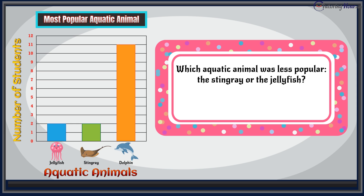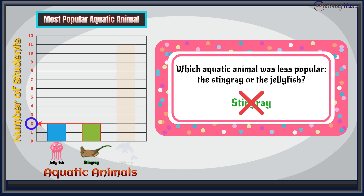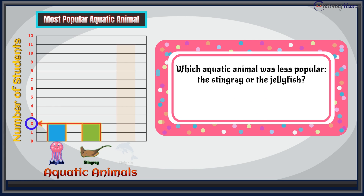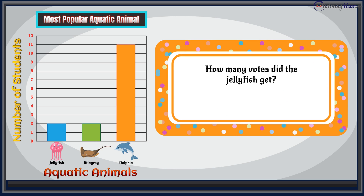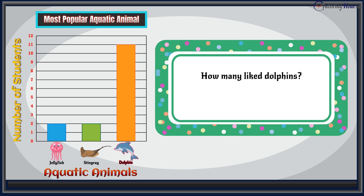Which aquatic animal was less popular — the stingray or the jellyfish? If you said stingray, that would be wrong. If you said jellyfish, that would still be wrong, because both the stingray and jellyfish have equal numbers of votes. How many votes did the jellyfish get? The jellyfish got two votes. How many liked the dolphins? Give yourself a pat on the back if you said eleven.